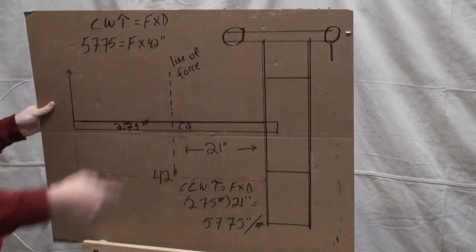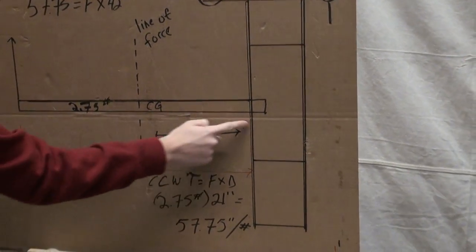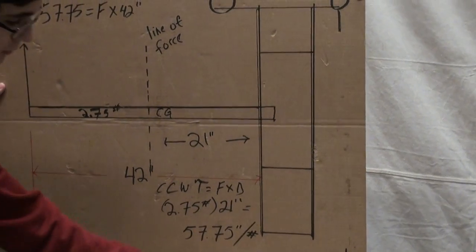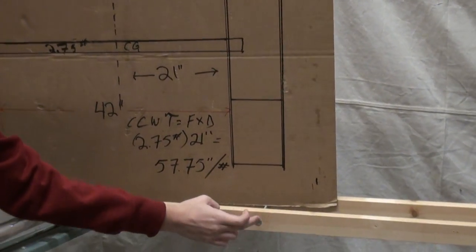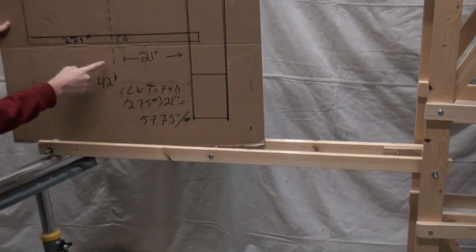Wait, there's the line of force. Hold on. Line of force to the pivot point. Line of force goes through the center of gravity, which is right about here. So this distance to the pivot point down there, 21 inches.